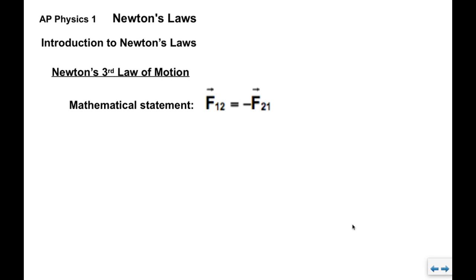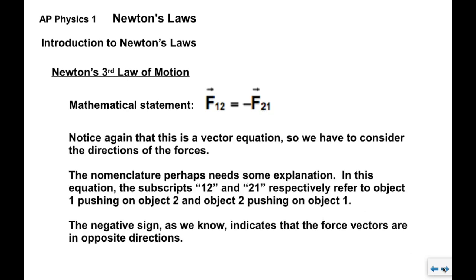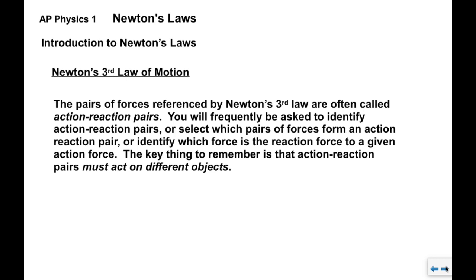Our mathematical statement is vector F₁₂ = -F₂₁. That probably needs a little bit of explanation. The 12 implies the force on object one due to object two—object two pushing on object one. So we have one object pushing on the other and then the other object pushing back on the first one. Notice that the vectors are opposite in direction. If F₁₂ pushes to the right, F₂₁ pushes back to the left.